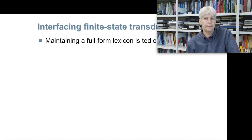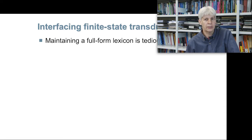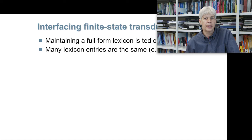Let's go to the finite state transducers or morphological analyzers. Maintaining a full-form lexicon is extremely tedious — you've experimented with grammars for seven sessions now. Whenever you need to add words like 'banana', you need to add the plural and the singular. You tend to forget it; it's just a pain. And many lexicon entries tend to be the same — whenever you want to add a new noun, you basically copy and paste the same information except for plural and singular.